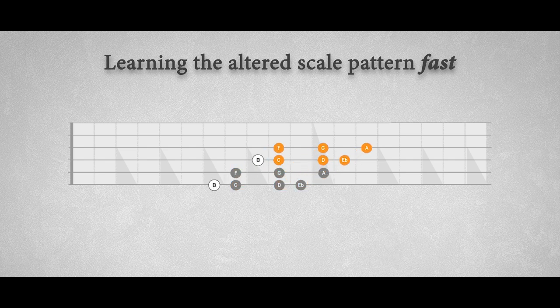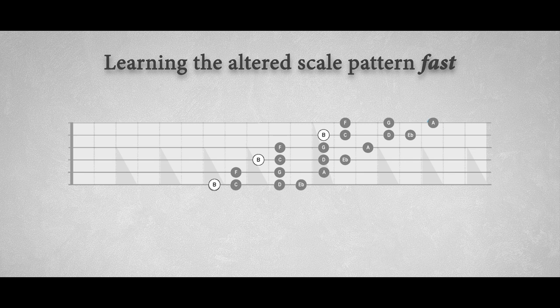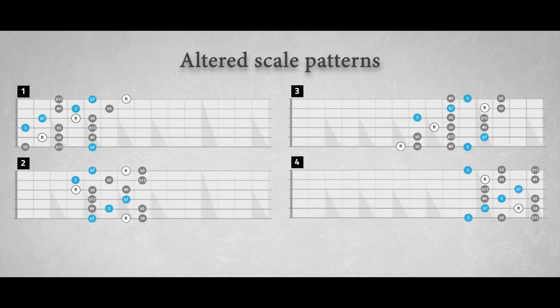Transpose this pattern to the next octave on the next two strings, and then again over the last two strings. After that it's much easier to combine these three similar forms into one whole scale pattern. This is a great way to learn scale patterns for any scale. Here are four patterns for the altered scale — some of them have three notes per string for nice and quick runs.